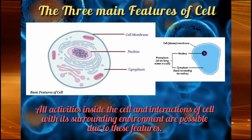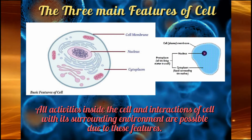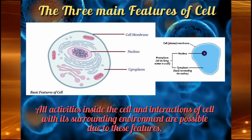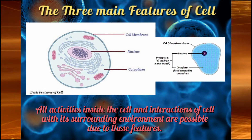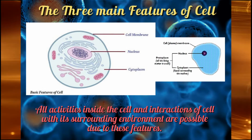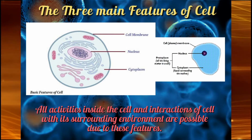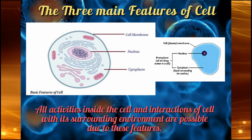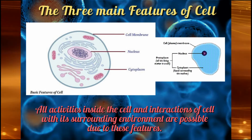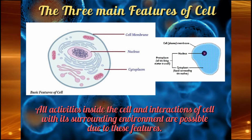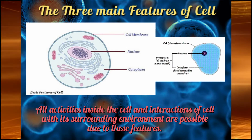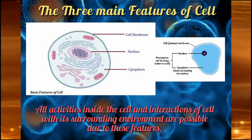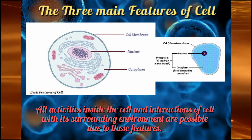Although cells are of different types like plant cell and animal cell, when we observe a cell under a microscope, there are three features common in all types of cells: the plasma membrane or cell membrane, which is the outermost covering of a cell; the nucleus, which is present at the center and is called the brain of the cell; and cytoplasm — 'cyto' means cell and 'plasma' means fluid — which is the jelly-like fluid present inside the cell. All activities inside the cell and its interactions with the surrounding environment are possible due to these features.